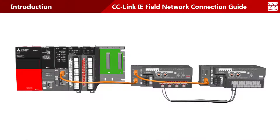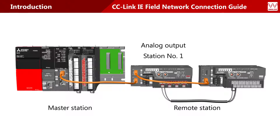Let's see the operation explained in this video. This control system is configured with a master station that controls the network, a remote station number 1 for current output, and a remote station number 2 for current input. The current output from station number 1 is received by station number 2.